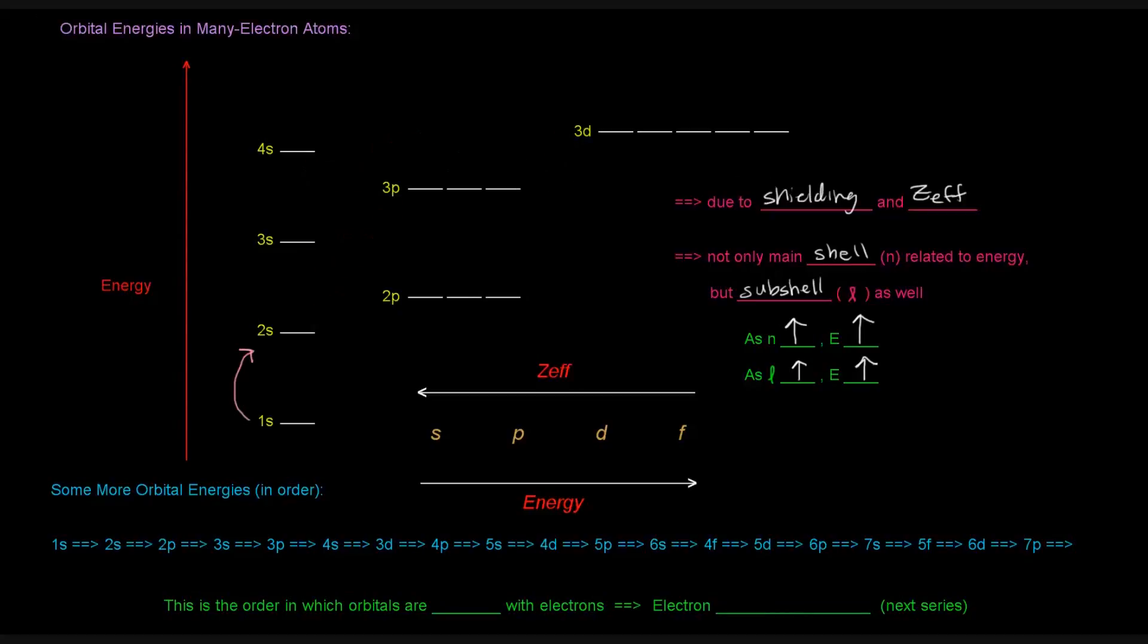Well, the order is actually shown down here. So we go from 1s to 2s to 2p to 3s to 3p to 4s to 3d to 4p to 5s to 4d to 5p, 6s, 4f, 5d, 6p, 7s, 5f, 6d, 7p, and so on.